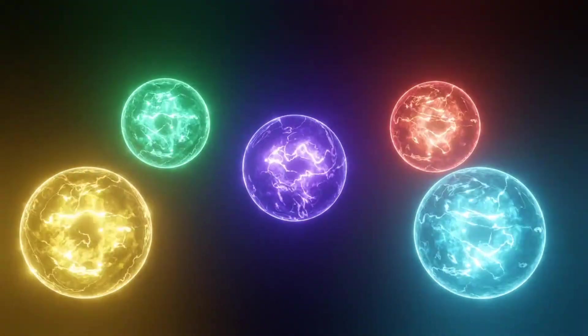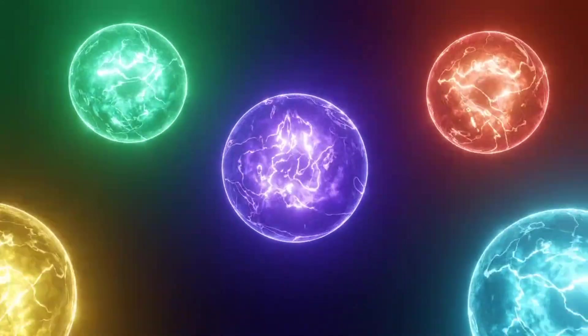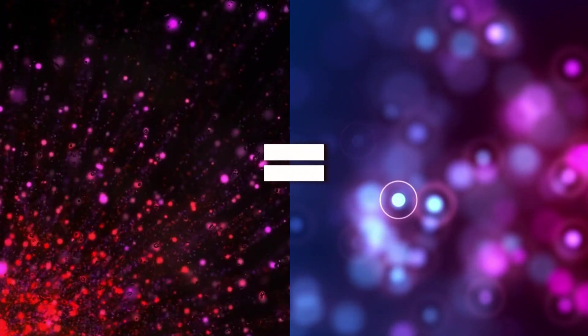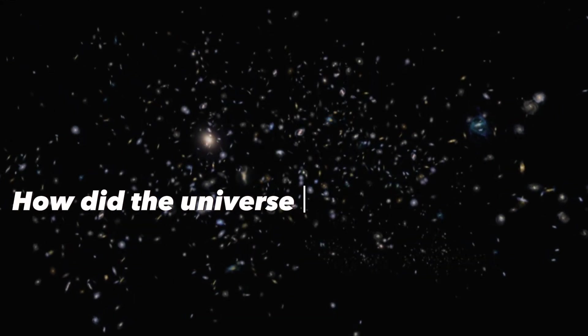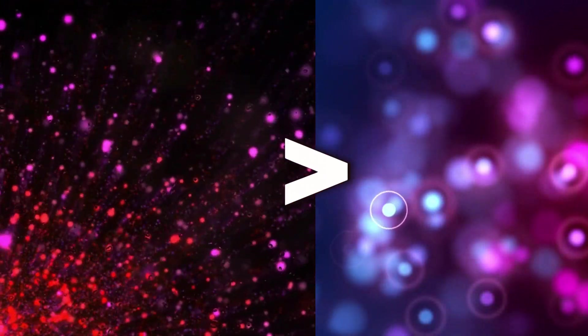Even when scientists create antimatter for experiments, the particles must remain in a vacuum because an antimatter particle in a normal matter environment would immediately go poof. The puzzling thing is that if theories predicting equal balance were true, matter and antimatter would have totally annihilated each other, leaving the universe empty. So how did the universe come into existence?